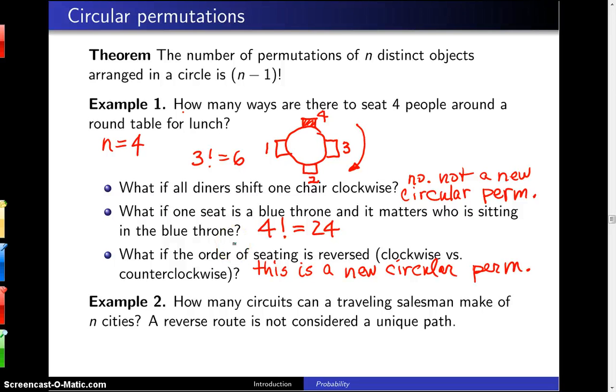So the question is, how many circuits can a traveling salesman make of N cities? And to give a specific example, let's take a look at N equals 5.